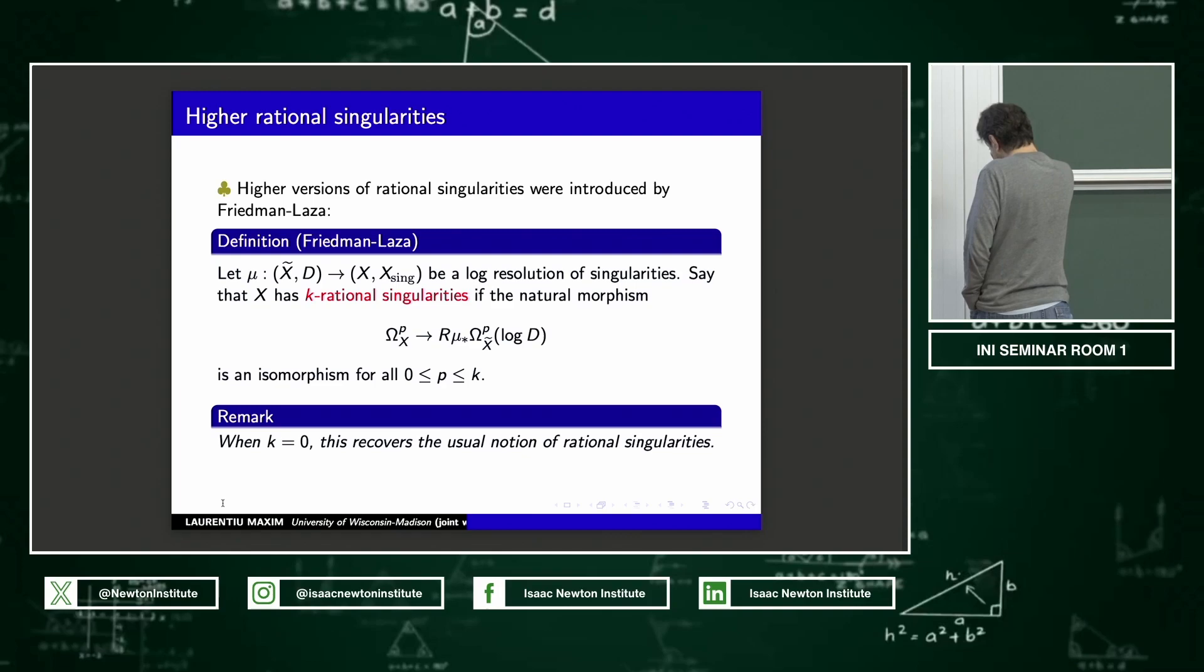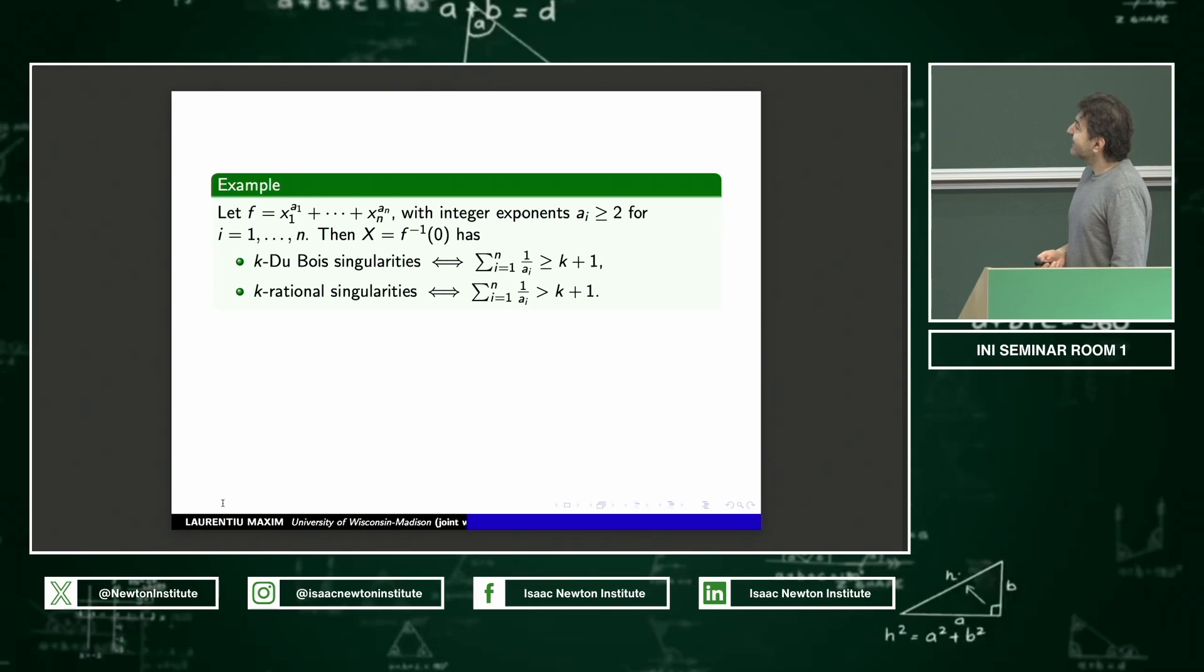One can work it out that in the case K equals 0, you get the usual notion of rational singularities. And then the question is, how to understand these types of singularities, how to detect them, which is one and not the other and so on. So I'm going to cheat a little bit and put the main one of the examples on the next slide. To get to this example, you have to go through many other things. But this is one of the main examples, Brieskorn type singularities. So K Du Bois means the sum of reciprocals of the exponents is greater or equal K plus one, and K rational means strictly greater than K plus one.